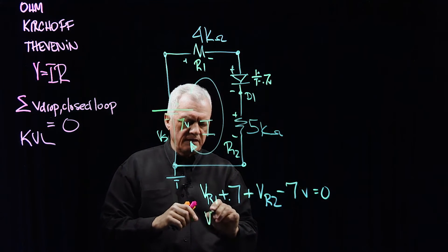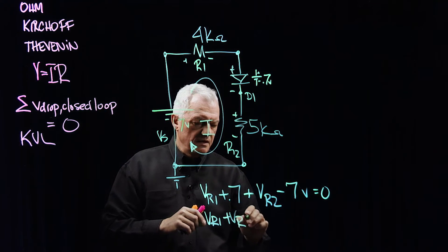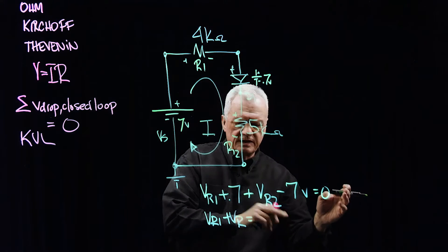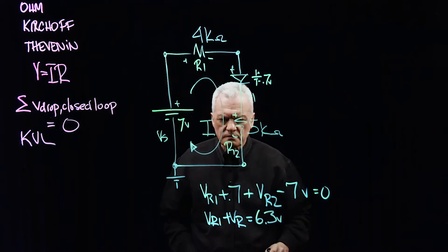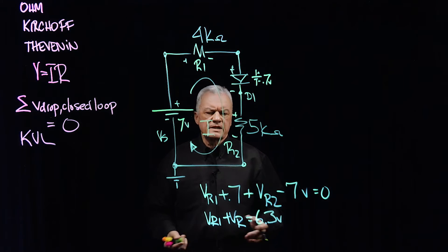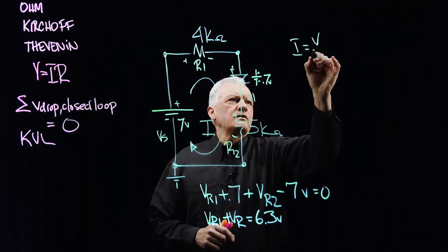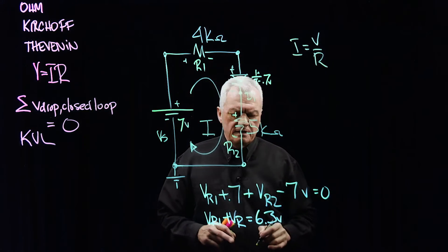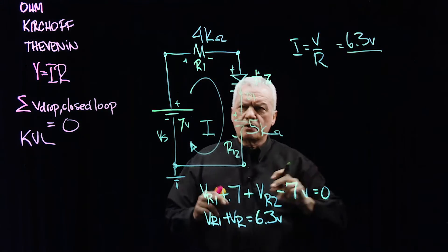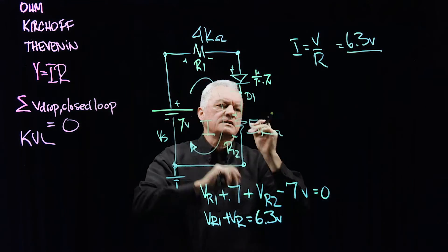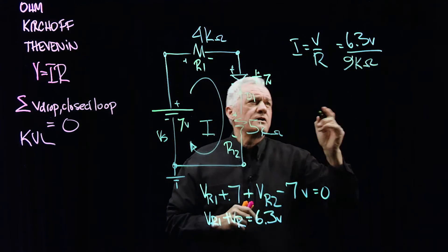Let's just collect terms. Here we have VR one, VR two, and on the other side, that'll be plus seven, minus 0.7, 6.3 volts. What is I in this circuit? Back to Ohm's law, I is equal to V over R. In this case here, we have 6.3 volts. The total resistance is 4K plus 5K, which is 9,000 ohms.